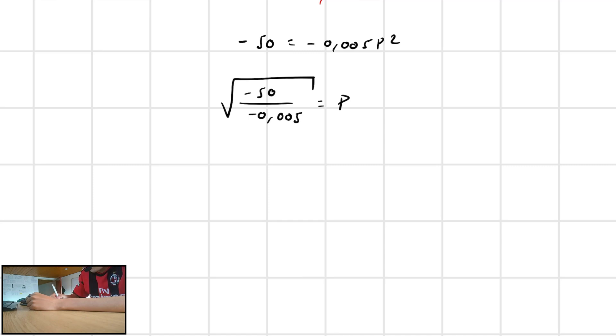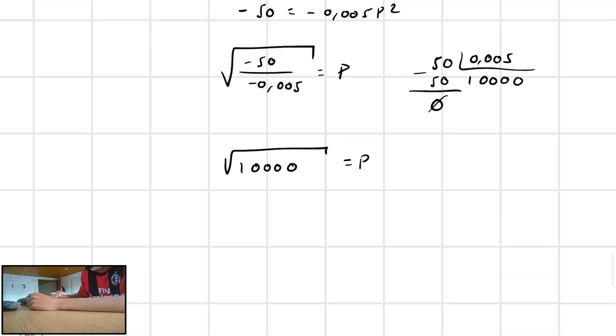Right here I have that 50 divided by 0.005 is equal to 10,000. So, the answer will be the square root of 10,000.